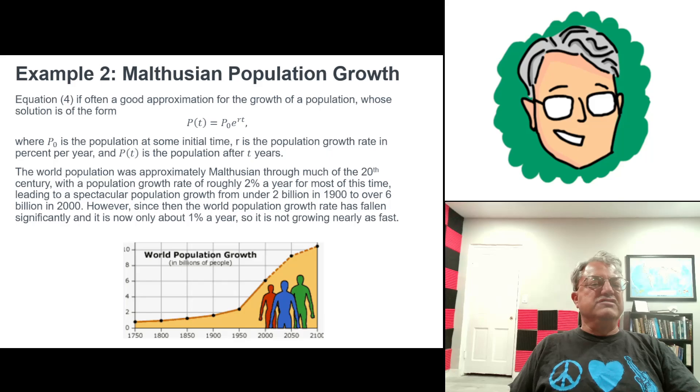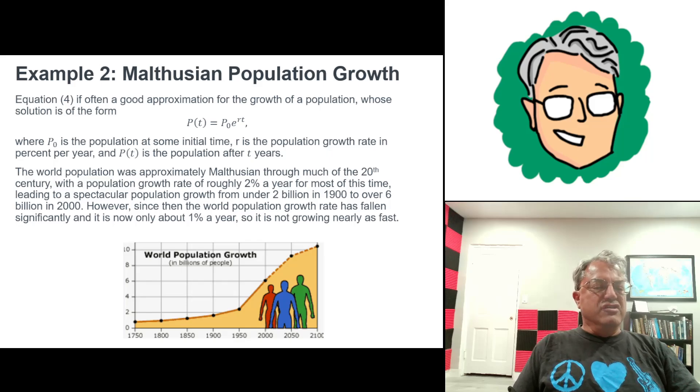And another example is what's called Malthusian population growth, which is really just another name for exponential population growth. And this is an important example because a lot of populations, a lot of countries, the population growth is approximately exponential or Malthusian. As a matter of fact, the world population growth rate was exponential for a really long time. As a matter of fact, I think it grew even faster than exponentially. The world population growth rate peaked.